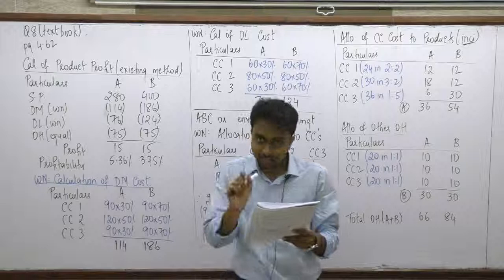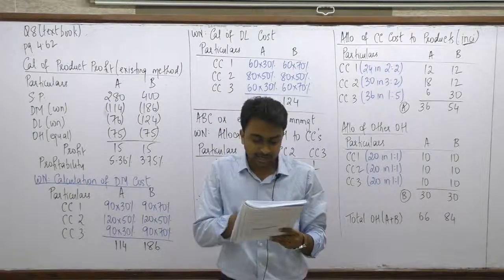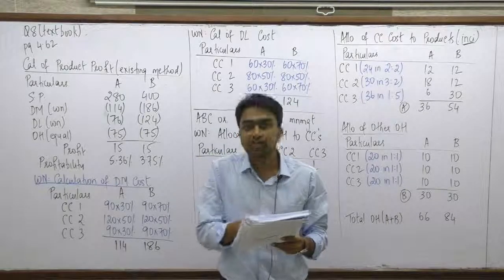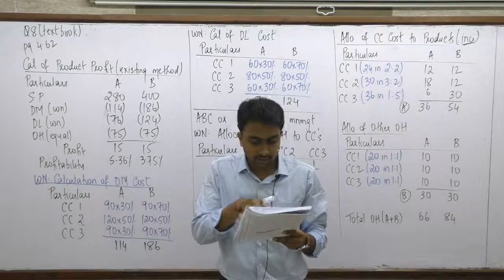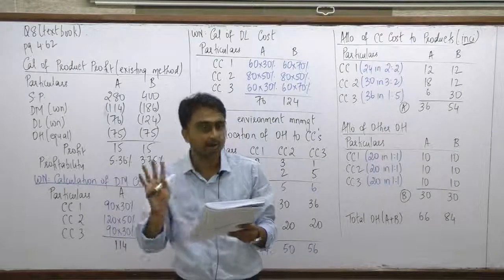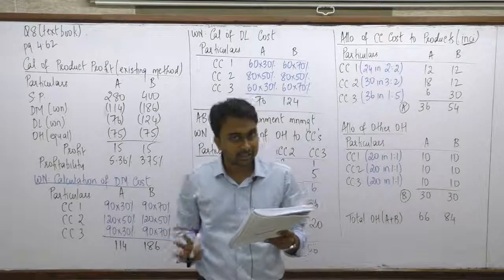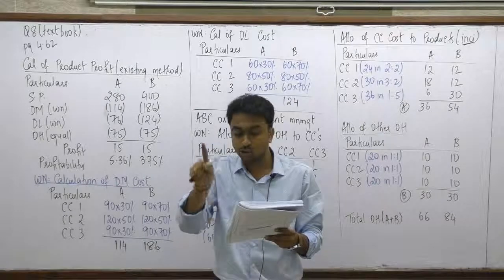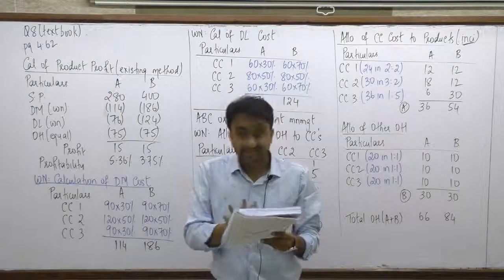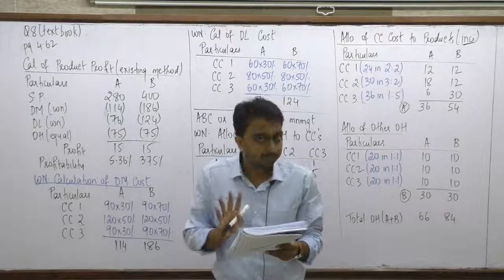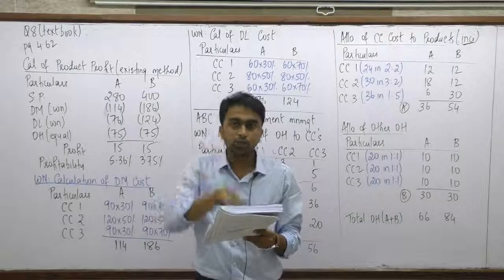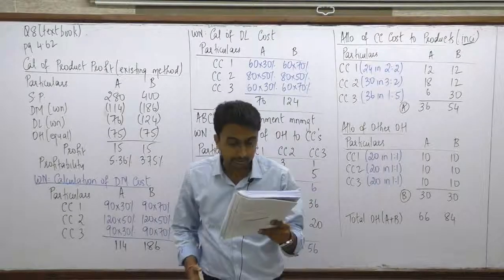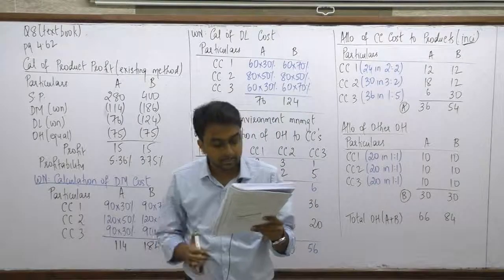The allocation of costs across cost centers is given in a table. For direct material (total ₹300), the split is: ₹90 in Cost Center 1, ₹120 in Cost Center 2, and ₹90 in Cost Center 3. For direct labor (total ₹200), the split is ₹60, ₹80, and ₹60. Then there's a cost allocation to Grade A and Grade B: 30%/70% for Cost Center 1, 50%/50% for Cost Center 2, and 30%/70% for Cost Center 3.